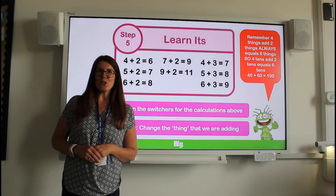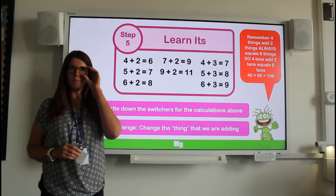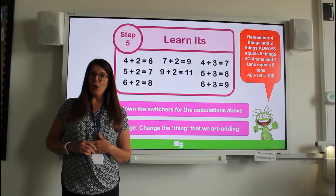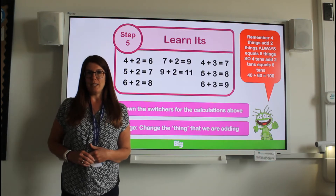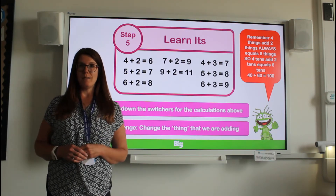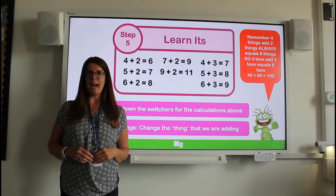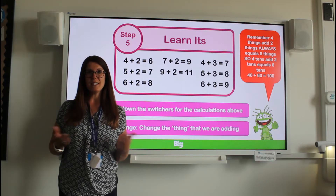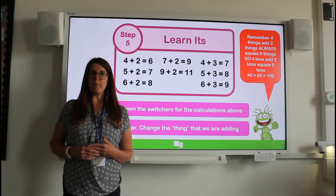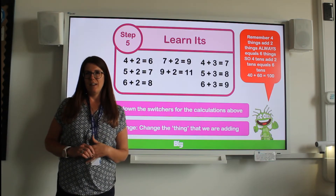Hopefully you have got all of those written down. Your challenge is something that we have spoken about in class before. We can use what we already know to work with bigger numbers. We've done this before when we change the thing that we are counting — so if you have five buttons add three buttons the answer is eight buttons. We are able to use what we already know to work with bigger numbers. If you are up for the challenge, see if you can now use your learn-its to add together your tens.